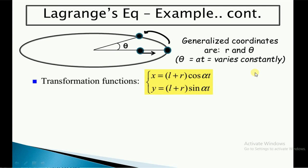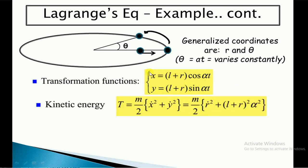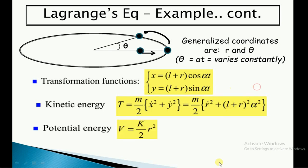We apply the transformation: x = (l + r)cos(αt) and y = (l + r)sin(αt). Here r is the displacement with respect to the natural length l, so the total length of the spring system becomes l + r. Taking derivatives x-dot and y-dot and adding their squares, we get kinetic energy T = (m/2)(r-dot² + (l+r)²·α²). The potential energy of the mass-spring system is V = (k/2)r².